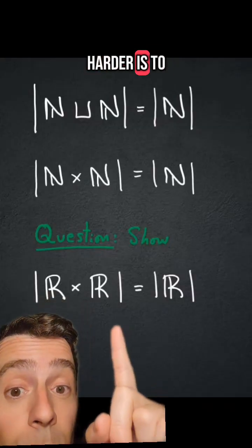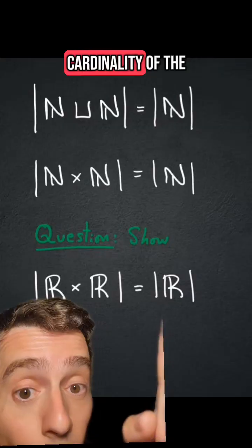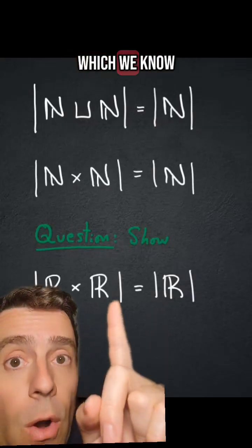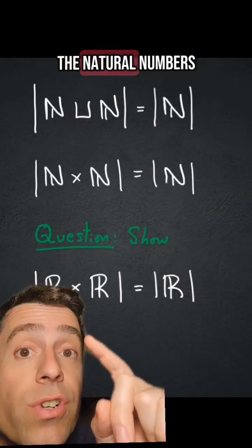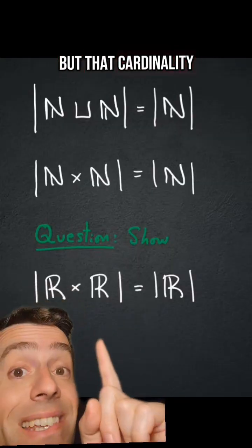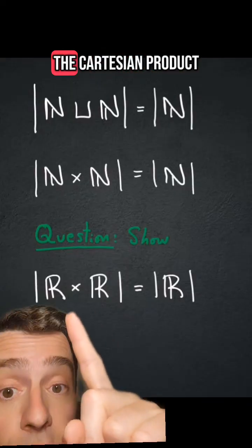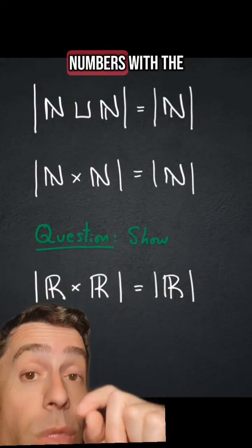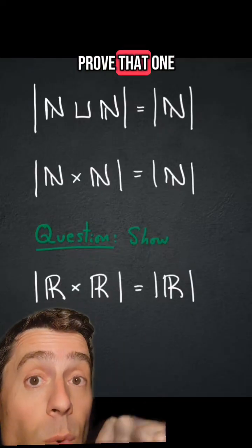Now, one step harder is to prove that the cardinality of the real numbers, which we know is larger than the cardinality of the natural numbers, but that cardinality is equal to the cardinality of the Cartesian product of the real numbers with the real numbers. Prove that one.